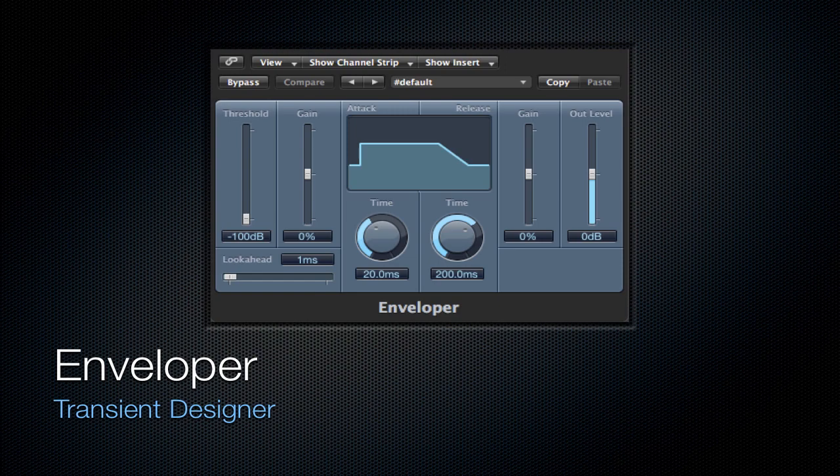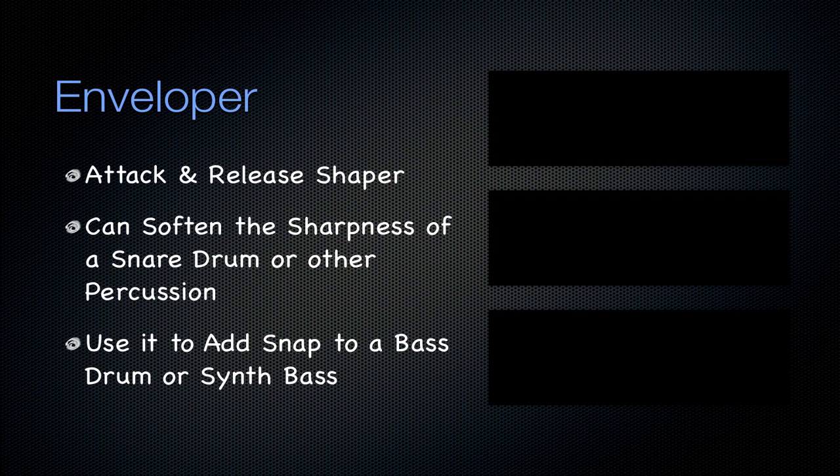Next is going to be the Enveloper. It's a transient designer — I've actually had a tutorial on this very recently, go check that out. You can change the attack and release separately from each other, which is good for percussion because percussion is basically a transient in itself. Every hit on percussion can be modeled as a single transient, so you can increase the sharpness of a snare drum, soften the sharpness of a snare drum, or work with the amount of tail on that snare drum. I use it a lot when working with percussion in general.